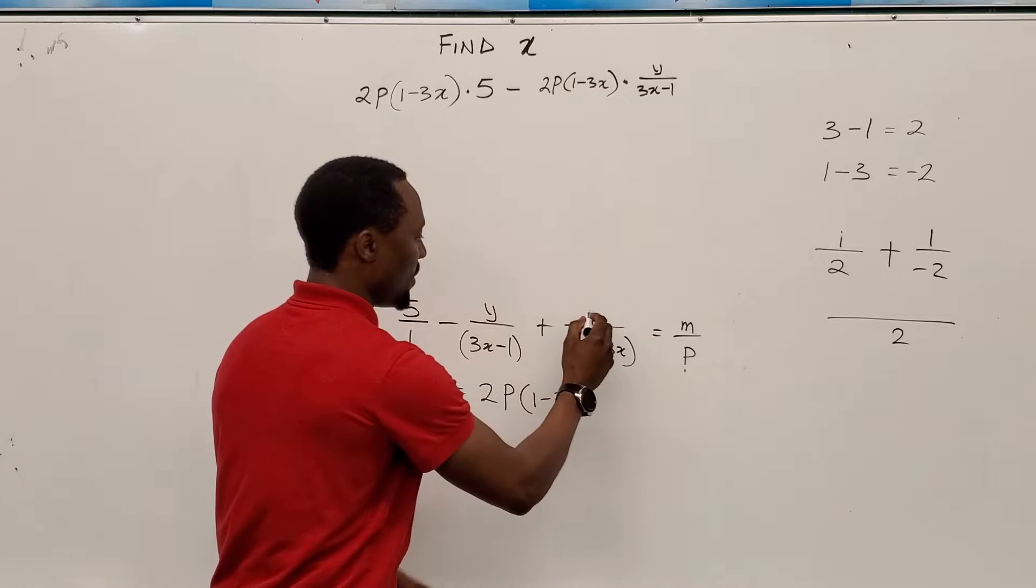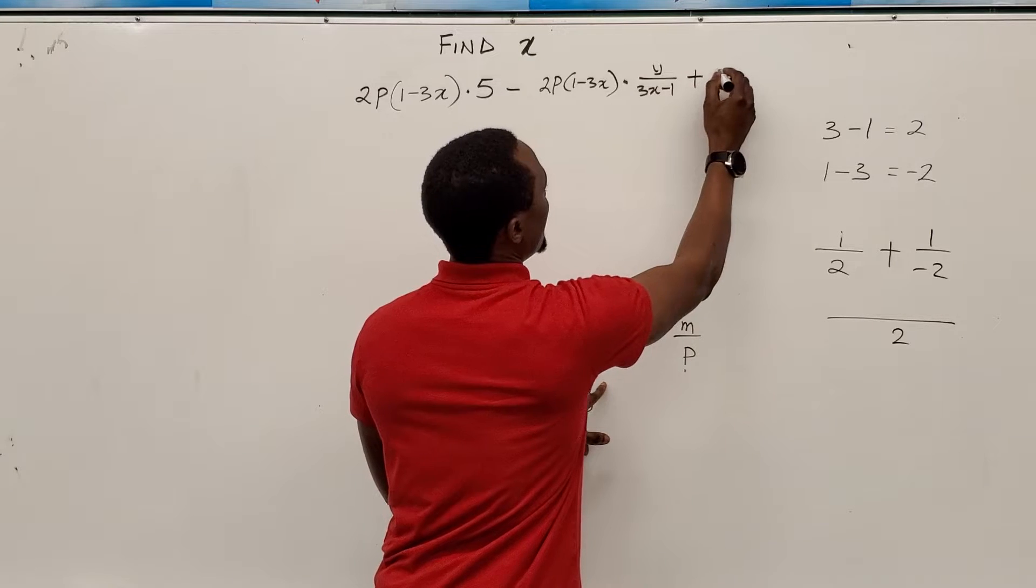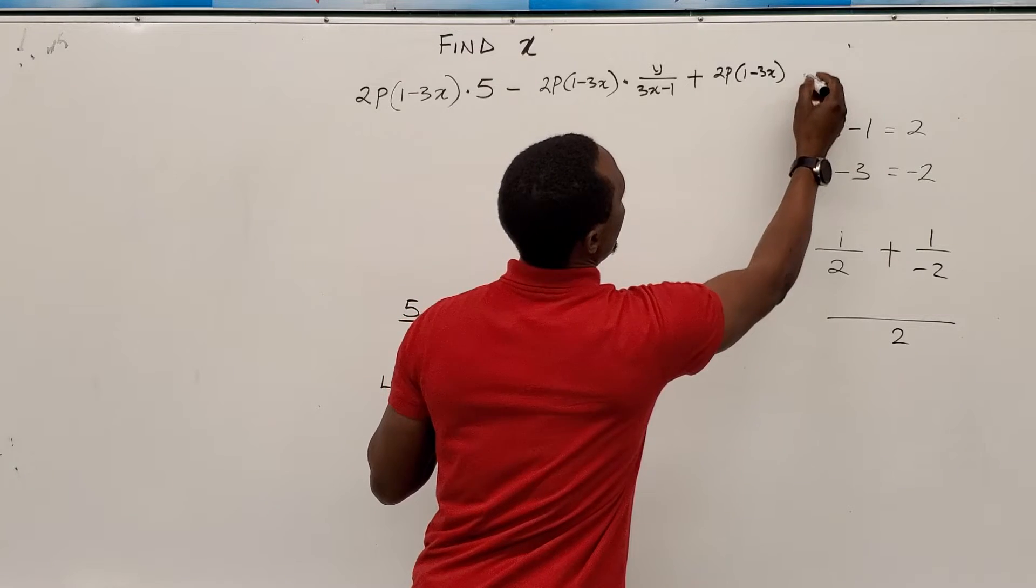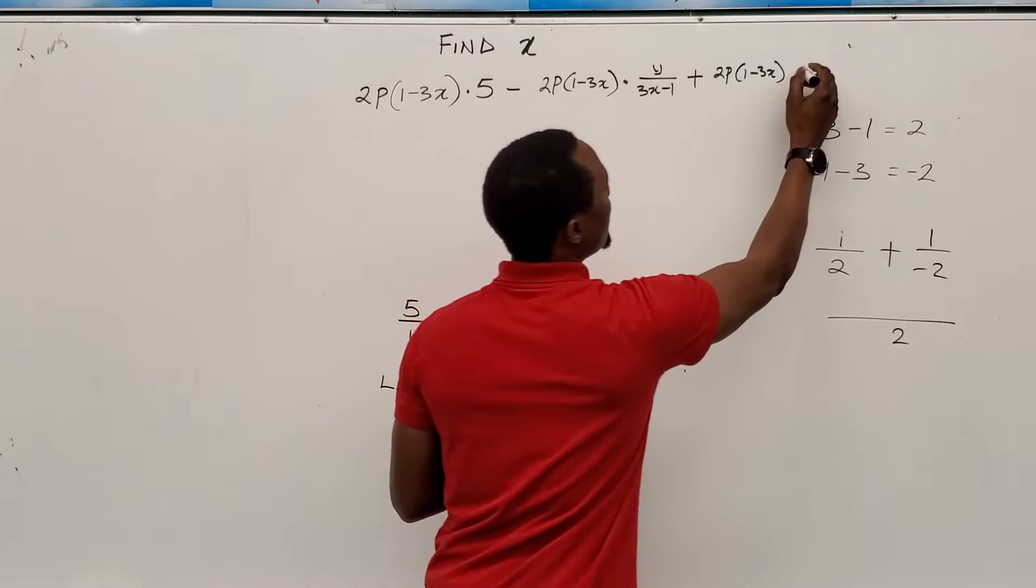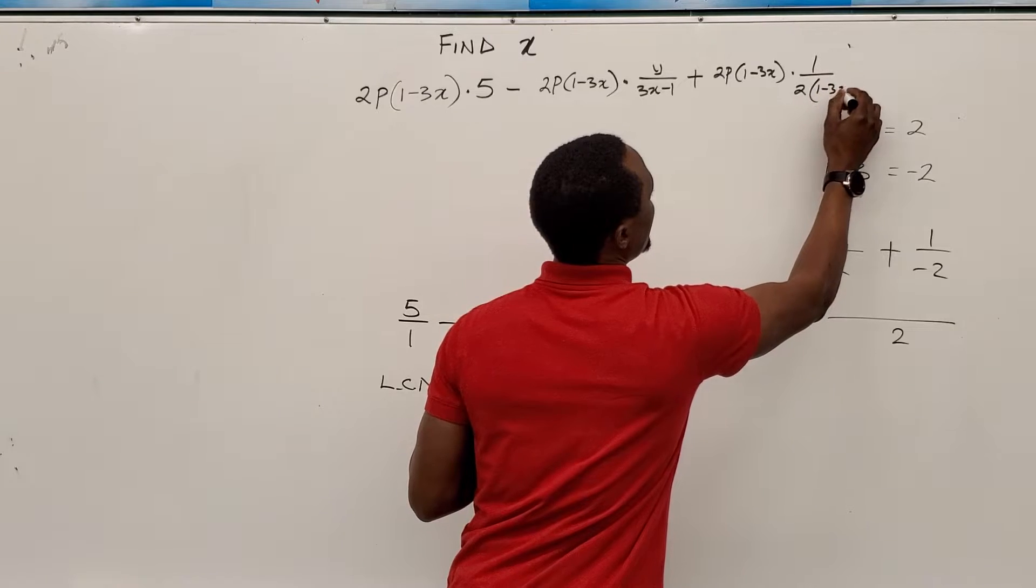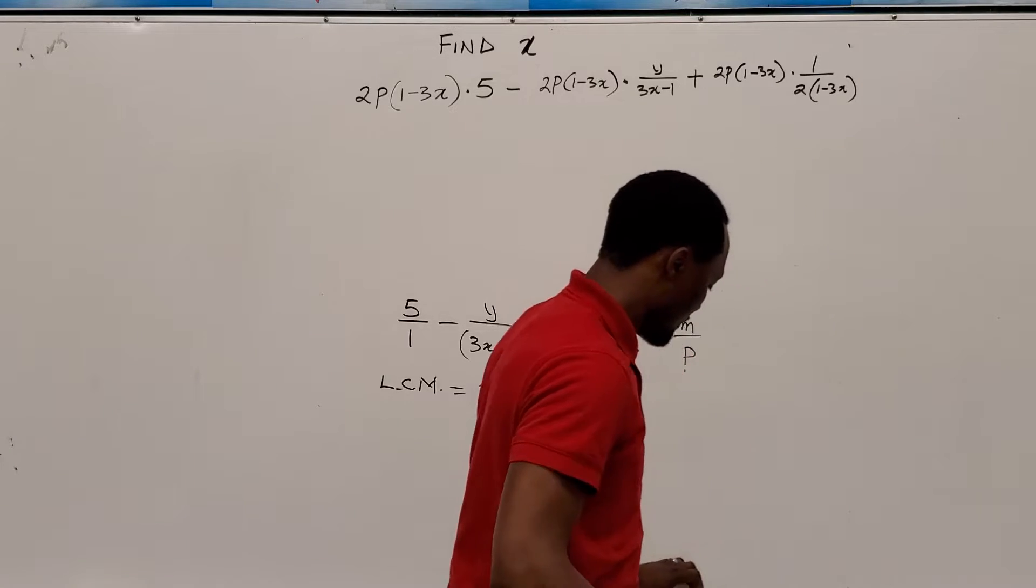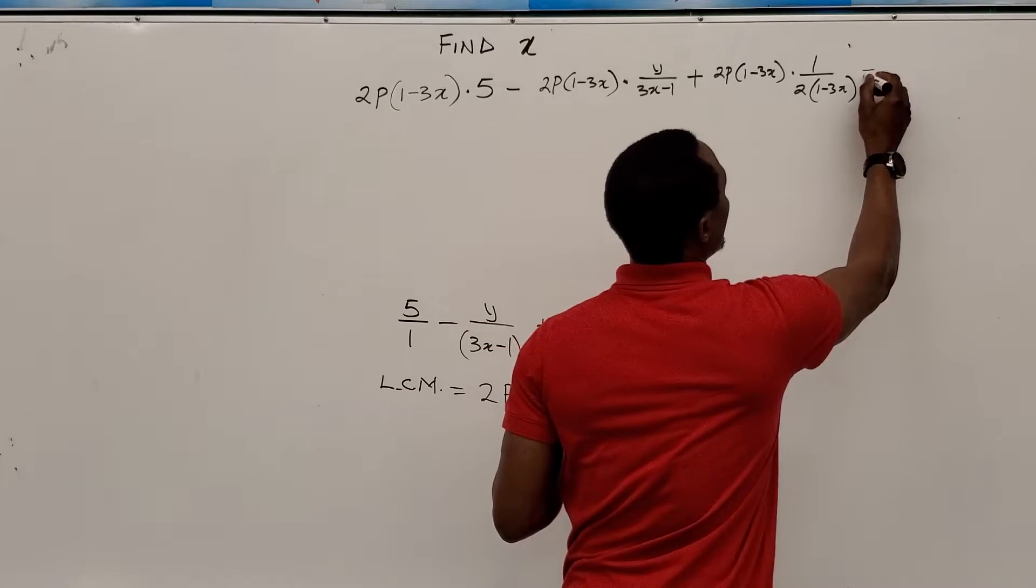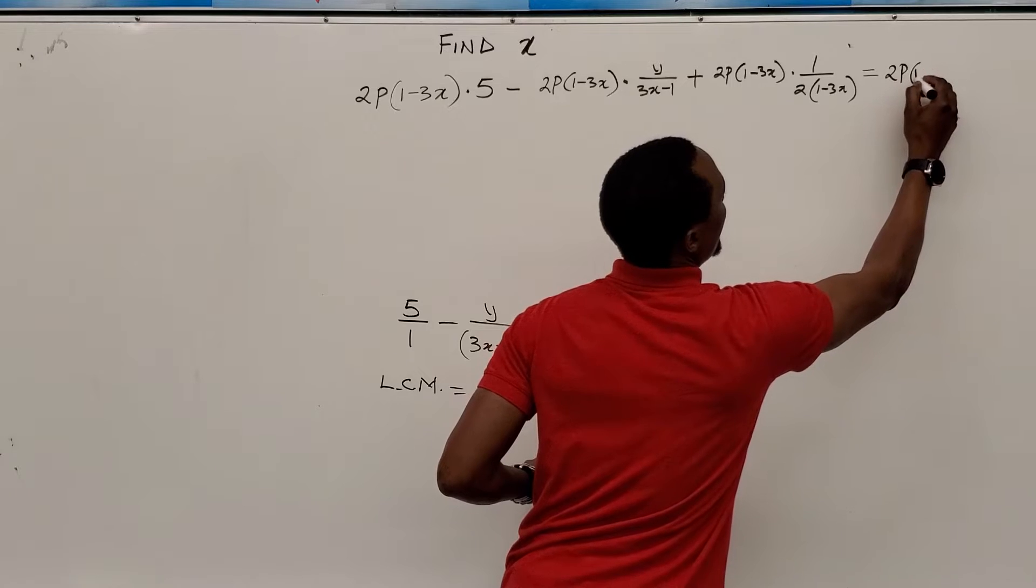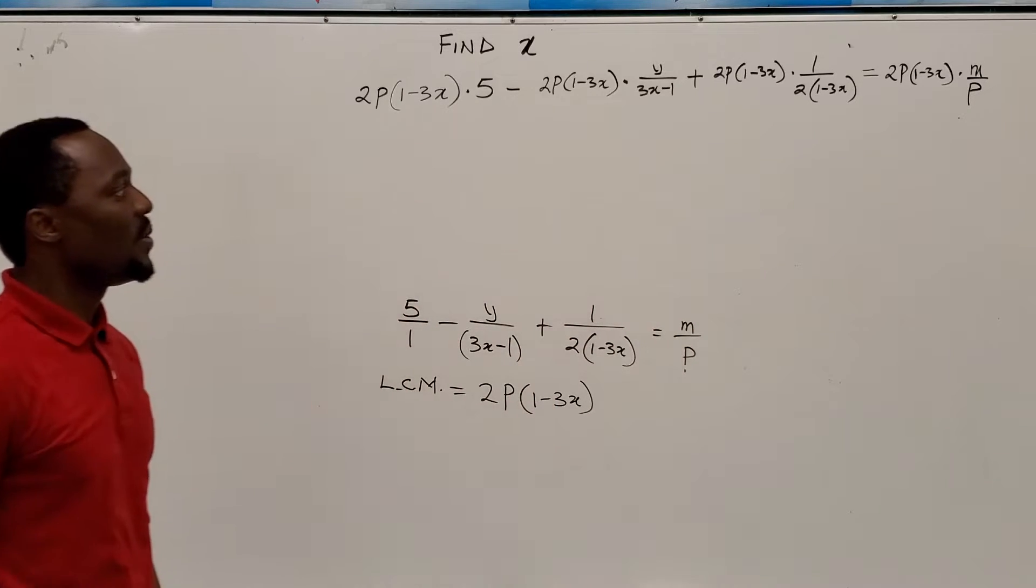I move ahead again to this one. Oh, there was a 1 here. To this one, it's going to be 2P plus 2P into 1 minus 3X multiplied by 1 over 2 into 1 minus 3x. Let's erase this. And equals 2p into 1 minus 3x times m over p. There we go.